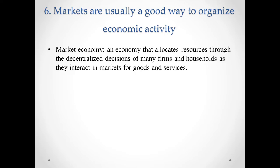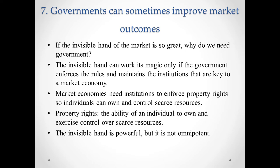Central planners failed because they tried to run the economy with one hand tied behind their back, without the invisible hand of the marketplace. The seventh principle is: governments can sometimes improve market outcomes. If the invisible hand of the market is so great, why do we need government? One reason is that the invisible hand can work its magic only if the government enforces the rules and maintains the institutions key to a market economy. Market economies need institutions to enforce property rights so individuals can own and control scarce resources.